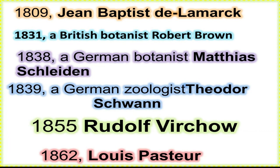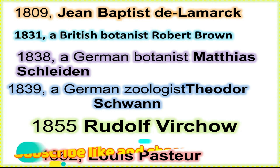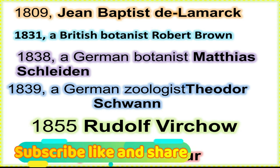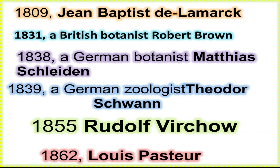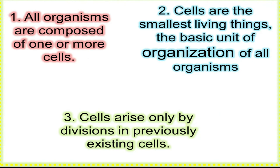In 1855, Rudolf Virchow, a German physician, made an important addition to the cell theory. He stated that cells arise only from pre-existing cells, which was a major contribution to the understanding of cell biology and the overall framework of the cell theory.